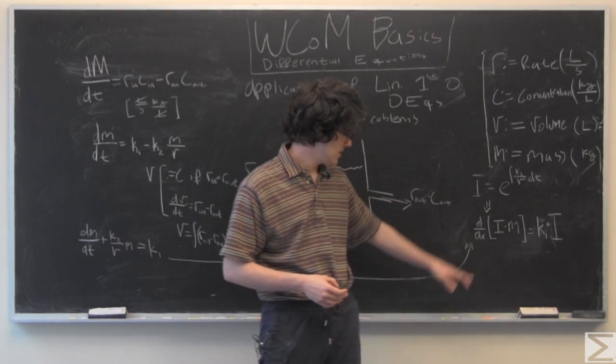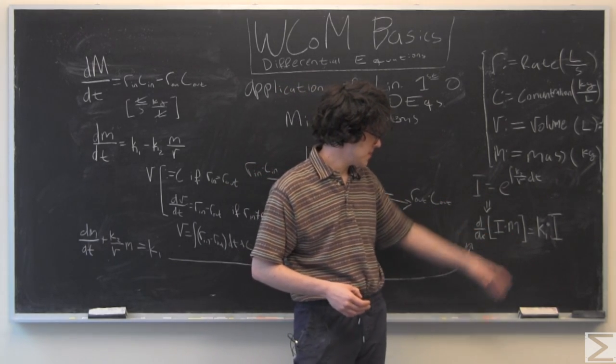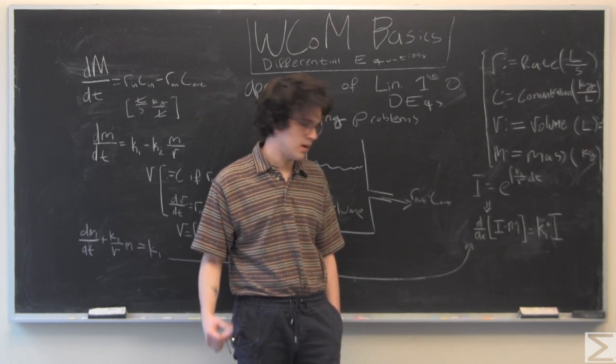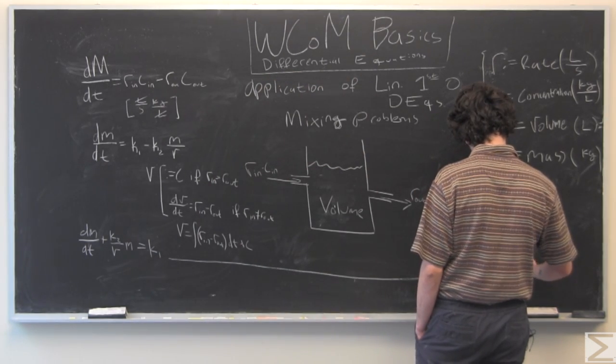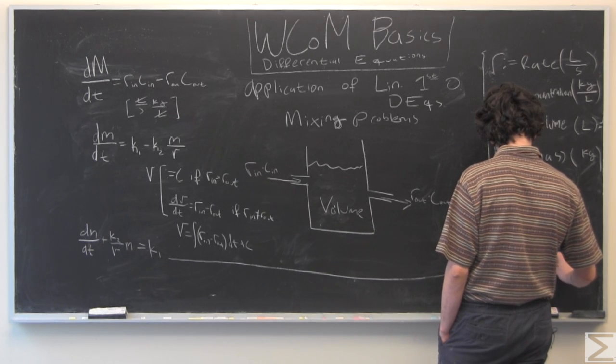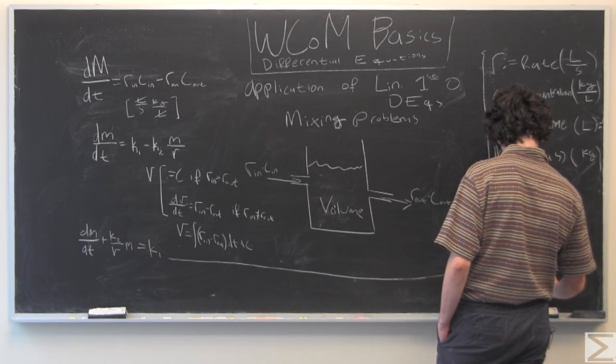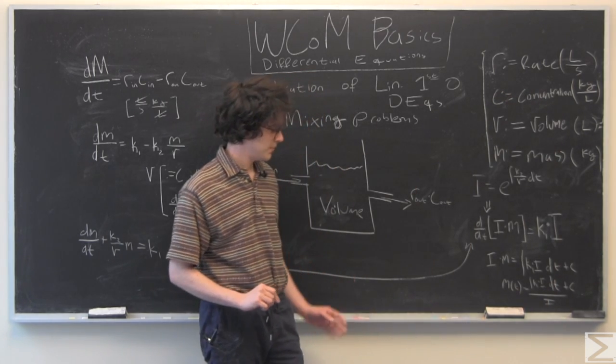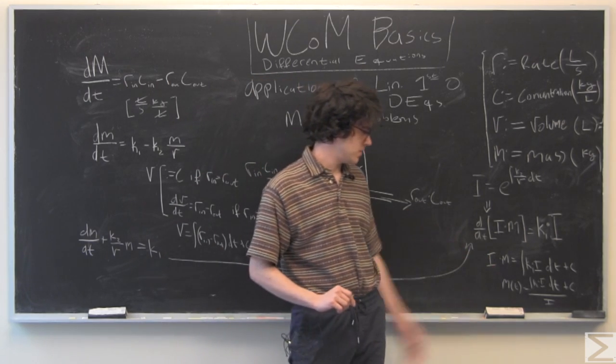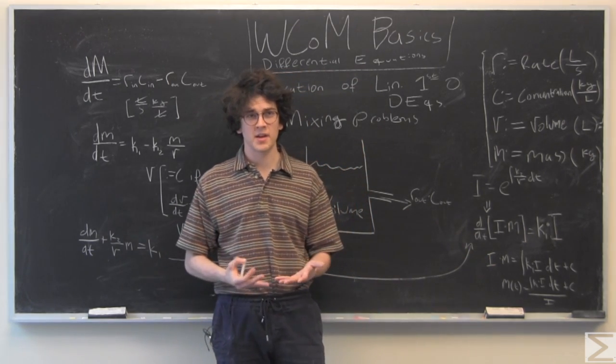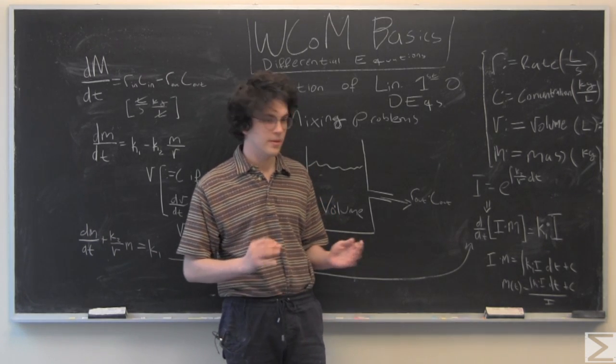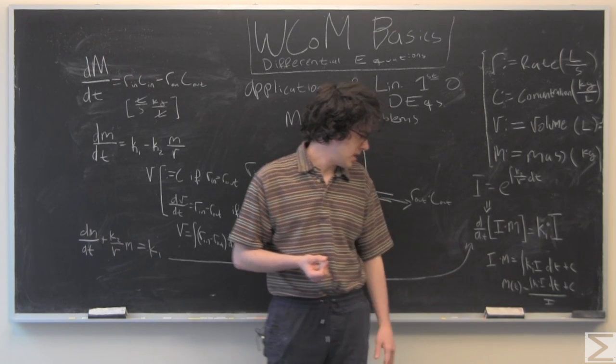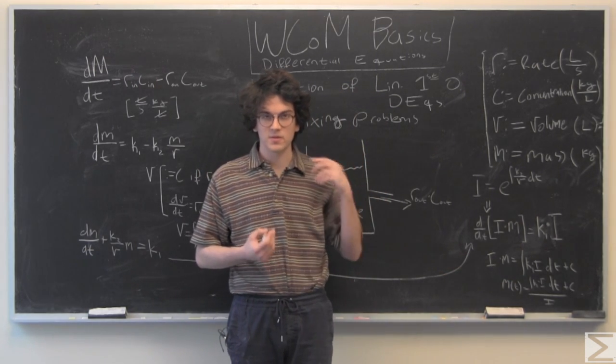And then we have d dx of i times m equals k1 times i. Integrate both sides with respect to x. And I kind of had to squeeze it in, but we would just integrate both sides with respect to t, which I called x previously, but it's all the same thing. And divide by i, and we have our function mass as a function of time.